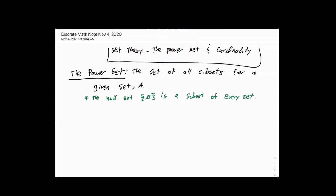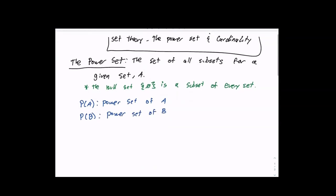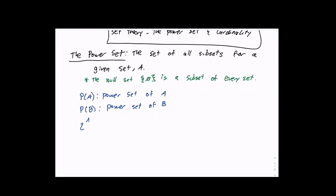Now for notation — I can ask you for the power set explicitly. P of A means the power set of A. P of B would be the power set of B. So if I ask you to find P of A in set theory, capital P of A refers to the power set of A. There's also another notation: two to the A is also the power set of A, and we'll talk about why that notation is important.